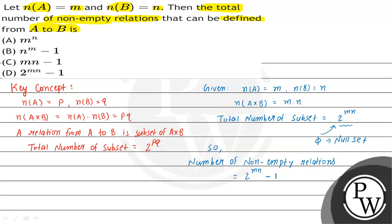Therefore, the answer is 2^(mn) - 1. Hence, option D is the correct choice.